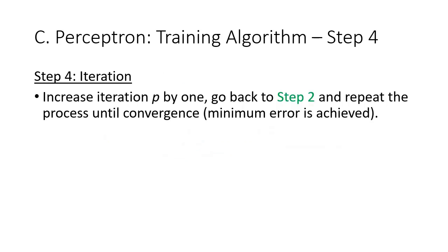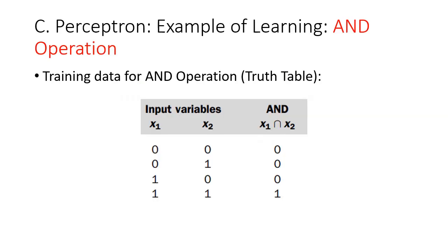Step 4 is iteration. P is increased by 1 and the process is repeated from step 2 until we reach convergence, which means the error is 0 or nearing 0. Let's look at how a perceptron is trained by using training data.